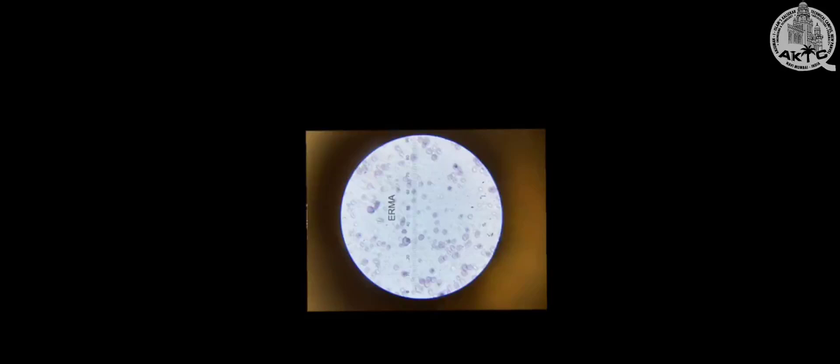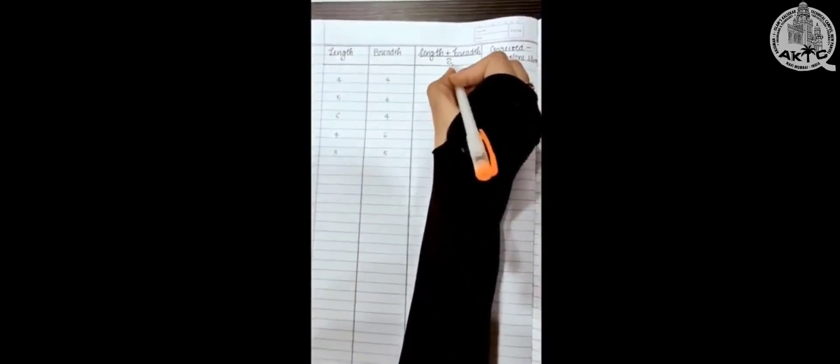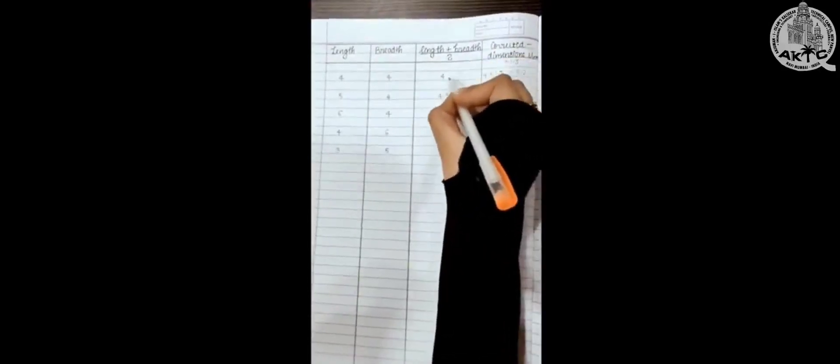So here we again get four lines. After taking the readings of length and breadth, we have to take its average, that is length plus breadth divided by 2. So here we got length as 4 and breadth as 4, so length plus breadth divided by 2 will be 4.